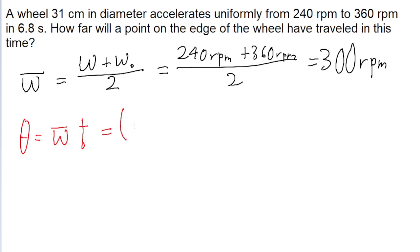So that is 300 revolutions per minute multiplied by 6.8 seconds. And we're going to have to convert that into minutes in order to keep our units consistent. So we multiply by 6.8 seconds and then do a unit conversion on that.